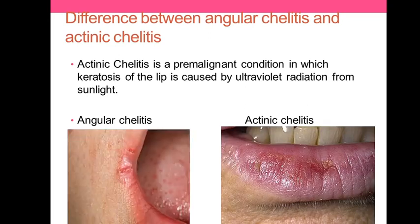Now let's discuss the difference between angular cheilitis and actinic cheilitis. Actinic cheilitis is a pre-malignant lesion or condition in which keratosis of the lips is caused by ultraviolet radiation from sunlight, so it is due to UV radiation. We call it actinic cheilitis.